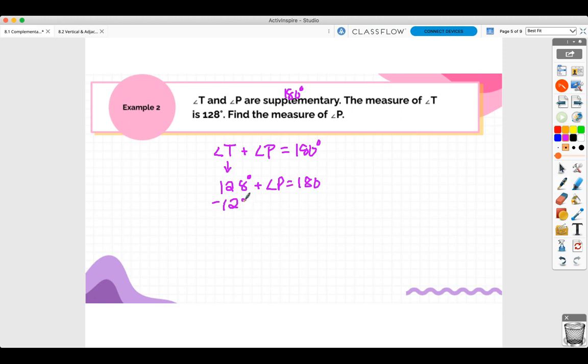And you can just subtract. You don't need to write it as an equation. I'm just showing you how it kind of works. So when you do that, when you subtract these two, 180 minus 128 gives you 52 degrees.